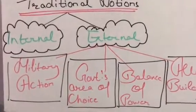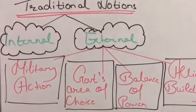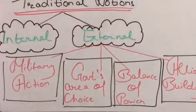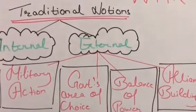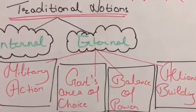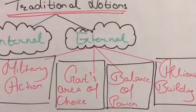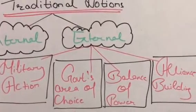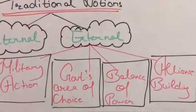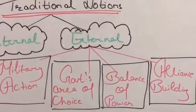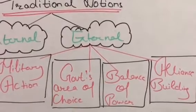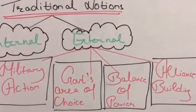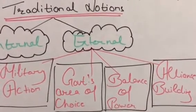This traditional notion is divided into internal and external aspects. In today's lecture we are going to discuss the external aspects and its four main elements: first is military action, second is government's area of choice, third is balance of power, and fourth is alliance building.